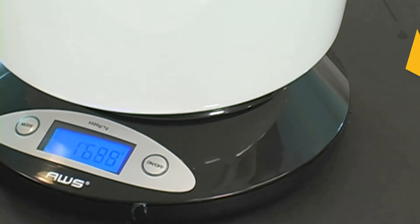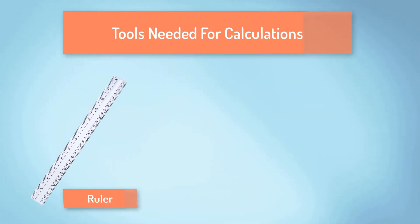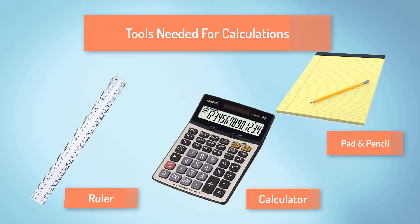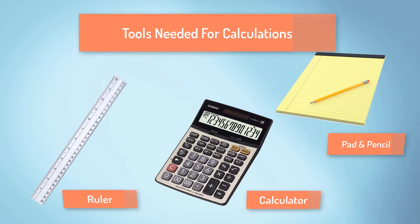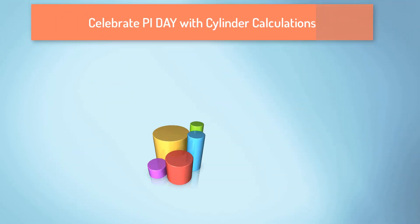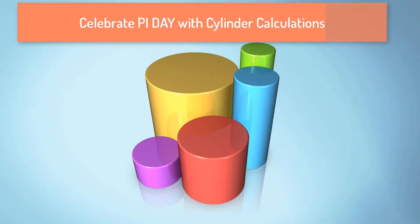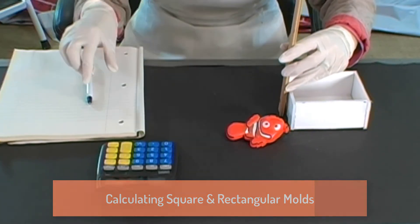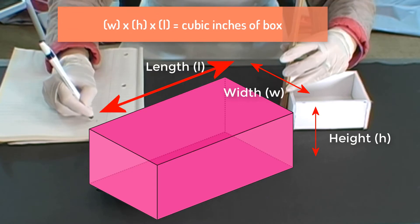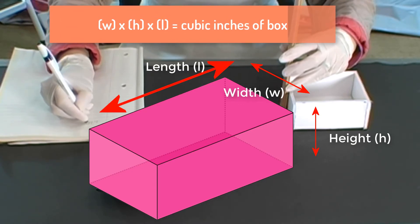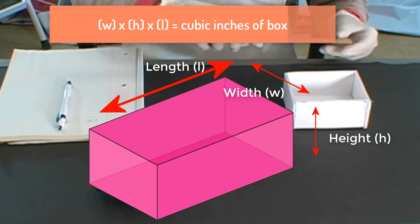To calculate the materials required by weight, you should have a ruler, a pad and pencil, and a calculator to help you with the calculations. For a square or rectangular mold box, simply use your ruler to measure and jot down its length, depth, and height. Then multiply these three dimensions together to give you the cubic inches of volume of the container.